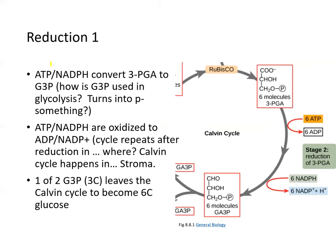In the reduction step, reduction of 3-PGA must occur in order to produce G3P. ATP and NADPH are what does that job — they reduce the 3-PGA into G3P. G3P and GA3P are the same thing.